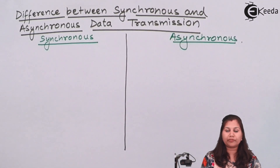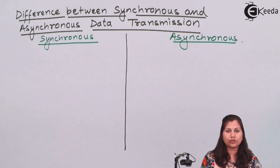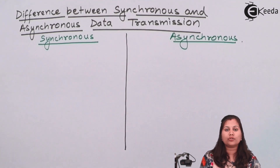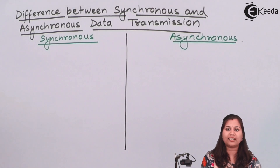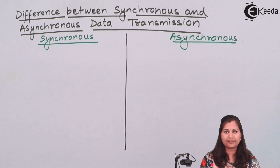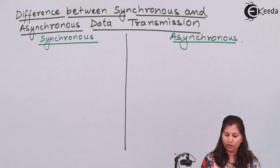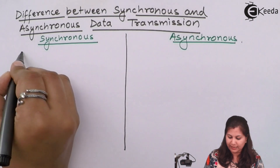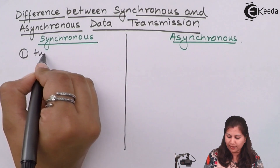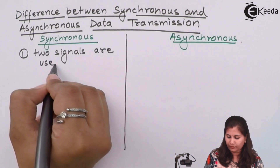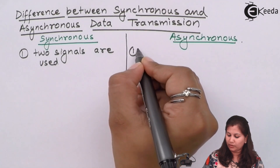The first and most important difference is that in synchronous data transmission, two signals are used: a clock pulse and a data signal. The clock pulse indicates to the receiver where the data is starting and at what position the data is ending. Whereas in asynchronous, only one signal is used — the data signal.